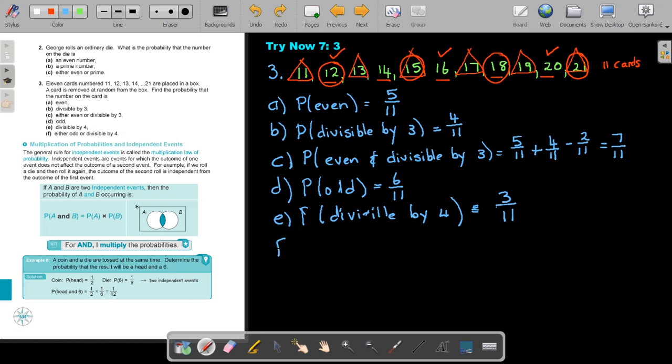And then, the last one. Either odd or divisible by 4. So it's referring to this too. Either odd or divisible by 4. Let's see. If I compare now. Remember. Let's just see. The odd numbers. What was the odd numbers? That was the triangles. So if I look at the odd numbers, the odd numbers must be 6 out of 11. Divisible by 4 will be 3 out of 11.